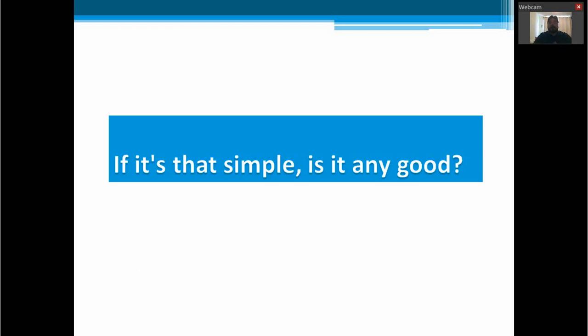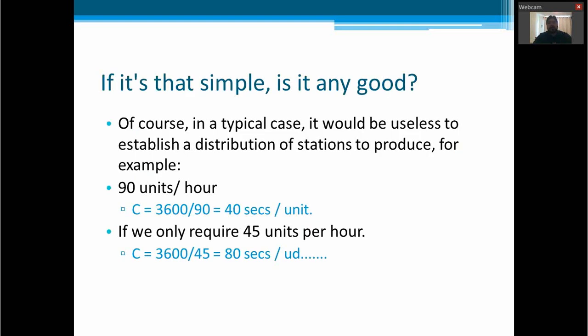If it's that simple, is it any good? Of course, in a typical case, it would be useless to establish a distribution of a station to produce, for example, 90 units per hour if we only require 45, because this will change the cycle time from 40 seconds to 80 seconds per unit.